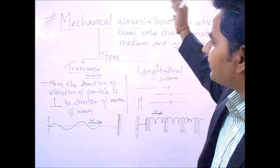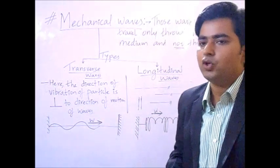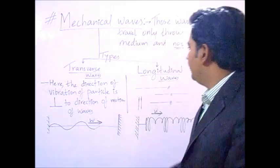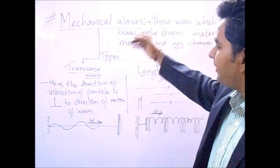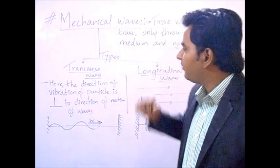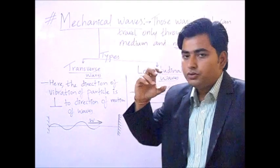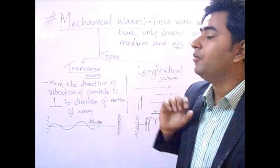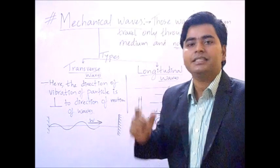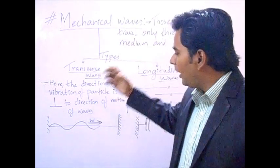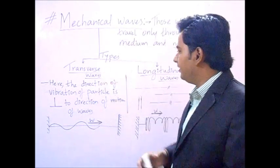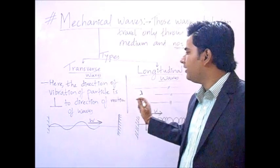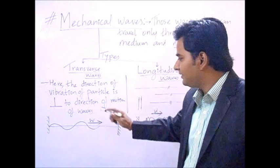Mechanical waves are of two types, based on the vibration of the particles and in which direction. The first type is transverse waves. In transverse waves, the wave moves in one direction and the particles vibrate — these two are perpendicular. The direction of the vibration of the particle is perpendicular to the direction of the motion of the wave.